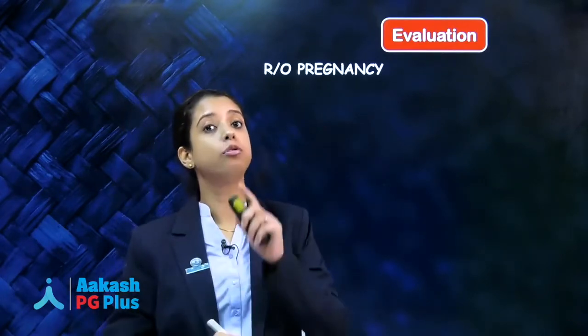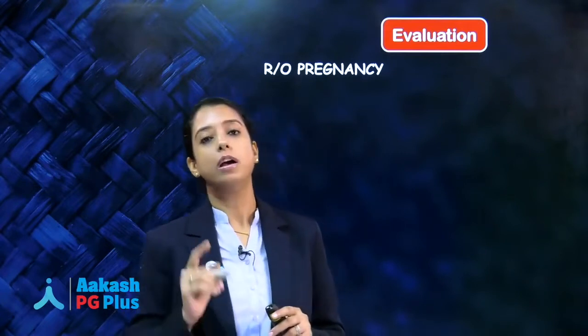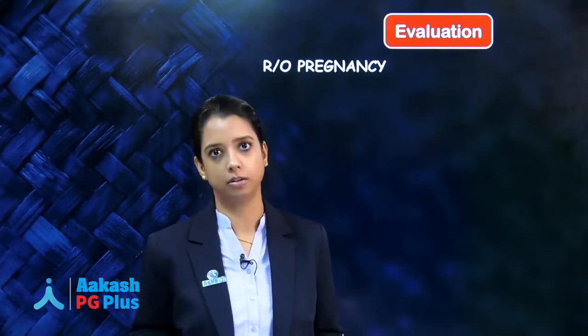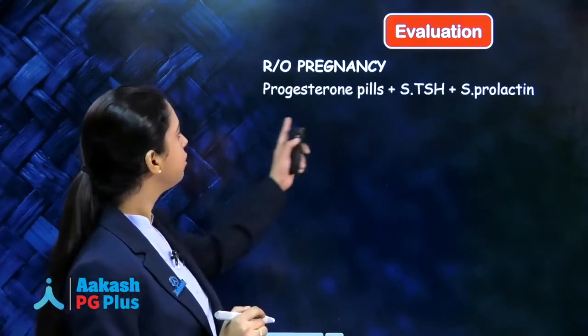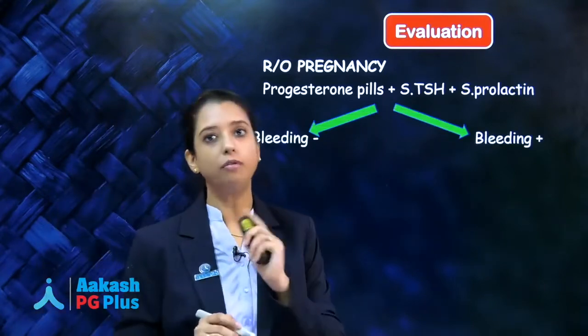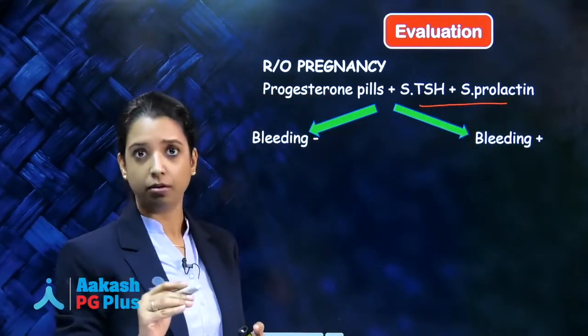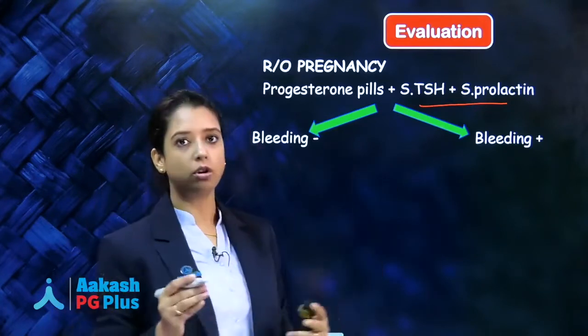Let us start with the evaluation of a patient who comes to OPD with secondary amenorrhea. First and foremost, rule out pregnancy — whenever a patient is sexually mature, always rule out pregnancy first. Then you want to know the estrogen status of the body. In primary amenorrhea we checked secondary sexual characters, but in secondary amenorrhea she already has those. So we judge current estrogen status by doing the progesterone challenge test. Along with that, we do serum TSH and prolactin, because these two endocrinal disorders are very common and easily treatable causes of amenorrhea.